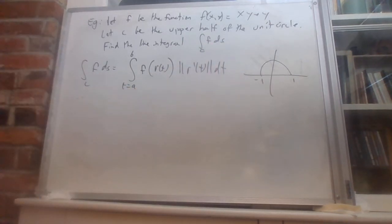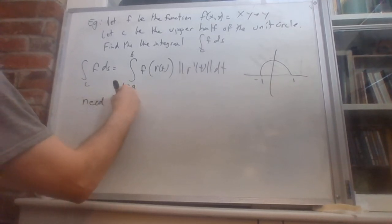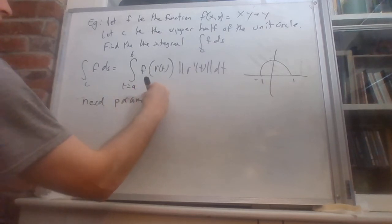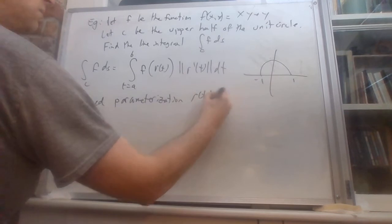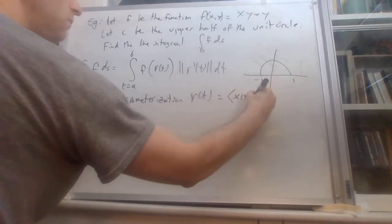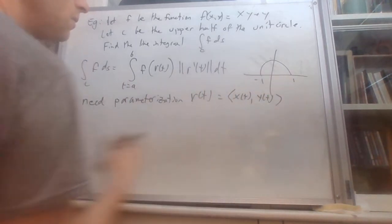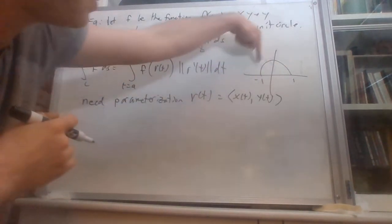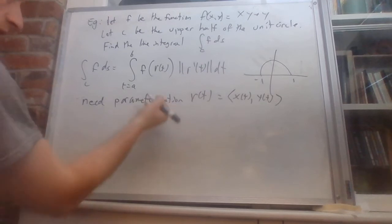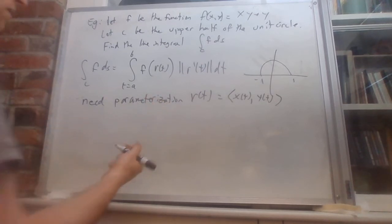So this gives us an idea of what we need. I'll need parameterization. So we need parameterization r of t. Because we're working with the upper half circle, let's use polar coordinates. That's circular.